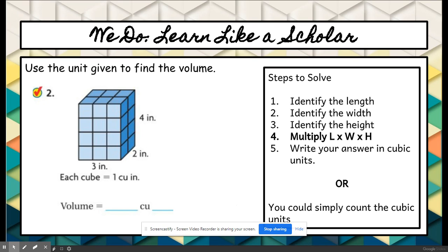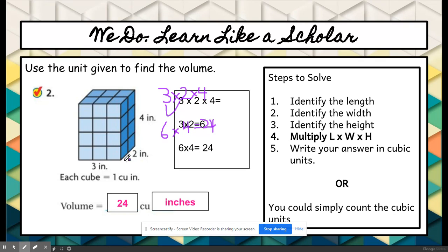Let's try one together. Our first step is to identify the length. The length of this figure is 3 inches long. The width is 2 inches long, and the height is 4 inches long. So we would write out our formula: length times width times height. I always encourage you, rather than trying to solve a larger problem, just break it down and solve two at a time. 3 times 2 is 6, and 6 times 4 is 24. So our volume is 24 cubic inches because here it's showing us our measurement is being measured in inches.